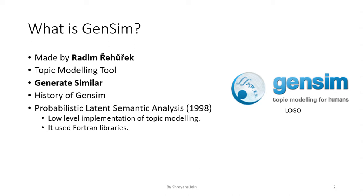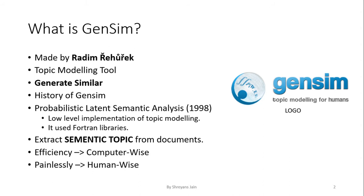Gensim extracts semantic topics from a given set of documents. What do we mean by semantic here? Semantic means similar or related meaning topics. And it does this efficiently and precisely. Efficiently, in that it can find the semantics between two topics as a computer does, and hence it is faster. And precisely, because humans have the tendency to understand what a topic is talking about.